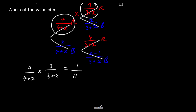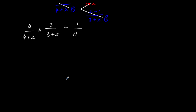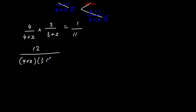We've got our equation, so now we focus on the algebra. To multiply fractions we times the tops and times the bottoms: 4 × 3 = 12 on top, and (4 + x)(3 + x) on the bottom, and that equals 1/11.